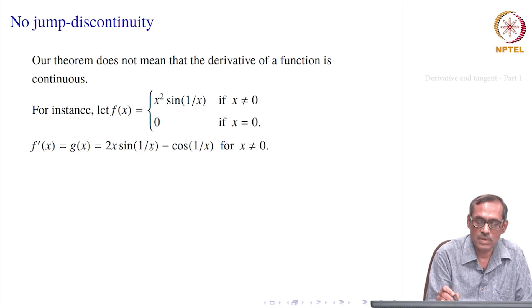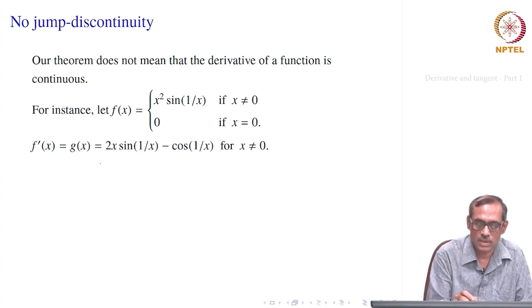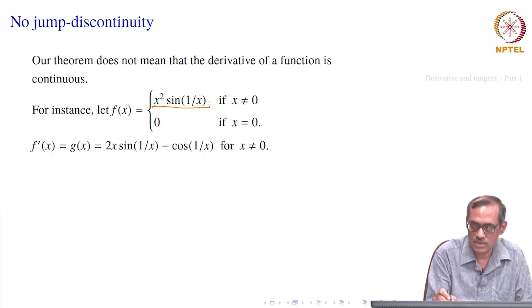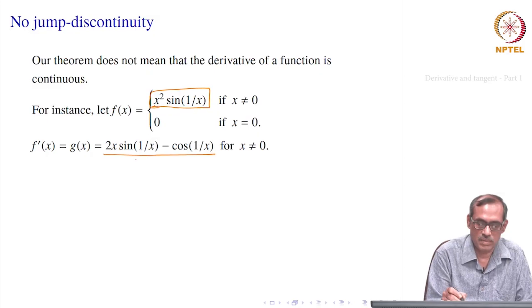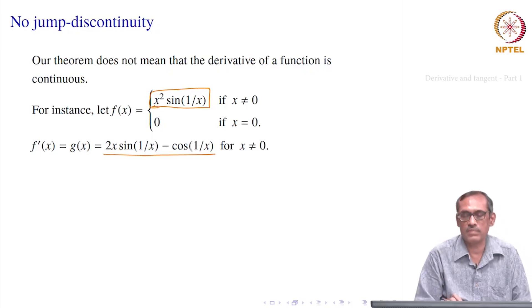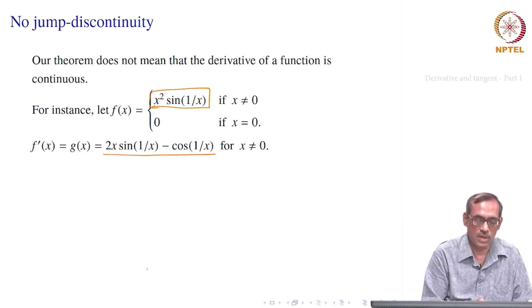What about the derivative — the new function? When x ≠ 0, using product and chain rule (which we will derive soon), the derivative is 2x sin(1/x) − cos(1/x) for x ≠ 0. That is how f'(x) looks for nonzero x.